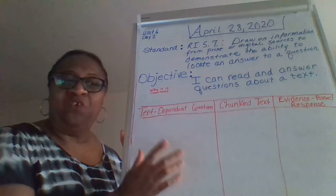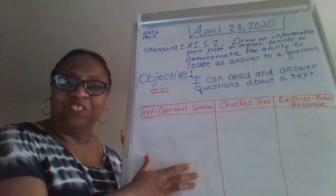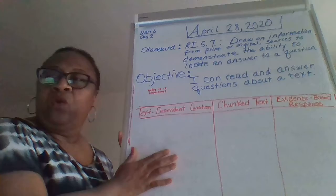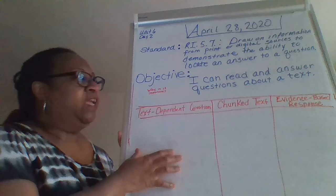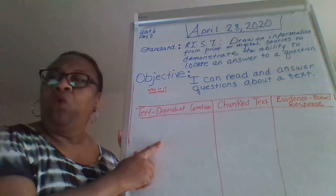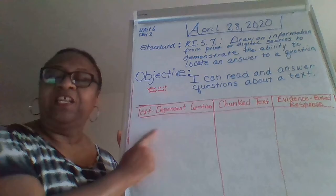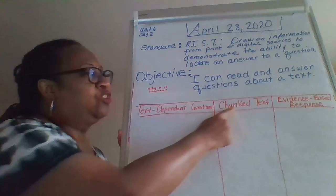So I'm going to model for you the very first question in our activity for today. If you go to your chart — either on your hardcover packet or the chart in your activity for today — in the text-dependent question column, the question says: What is Lewis Latimer well known for? That is the first question that you have.